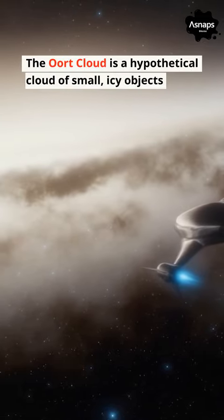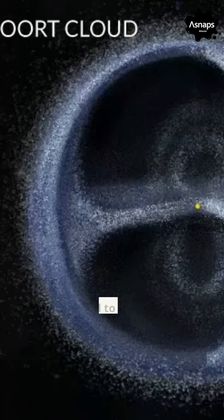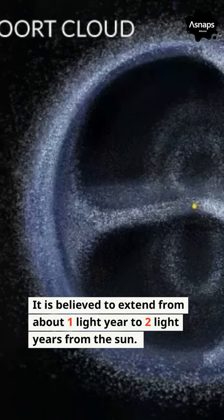The Oort Cloud is a hypothetical cloud of small, icy objects thought to exist at the outer reaches of our solar system beyond the Kuiper Belt. It is believed to extend from about one light year to two light years from the sun.